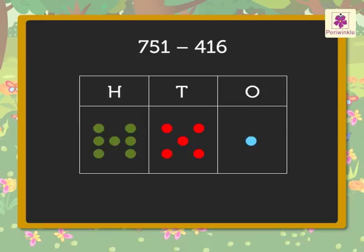Now, let us cancel the dots equal to the digits in the subtrahend. In each column, starting with the dots in the ones column first, then the dots in the tens column and lastly the dots in the hundreds column. But look, there is only one blue dot in the ones column and we need to cancel six blue dots. We cannot subtract six from one.